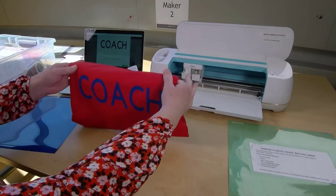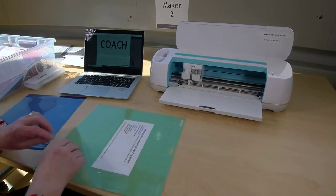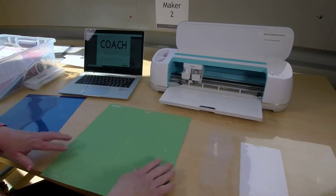Now it's time to send your project to the machine for cutting. You're going to adhere your iron-on vinyl to the mat. I'm going to use the standard green mat.